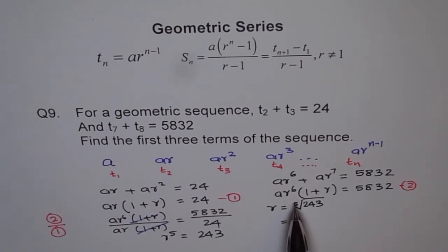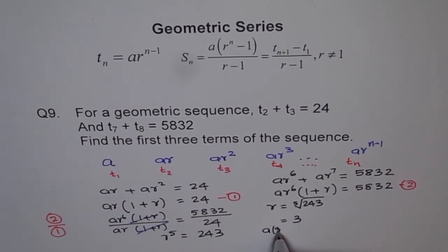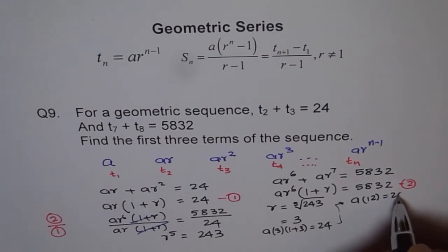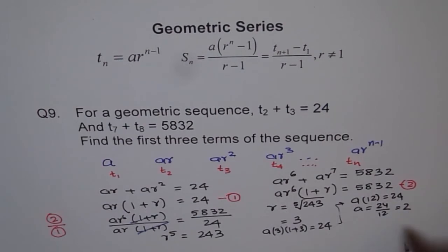Now, if r is 3, then what is a? We can plug the value of r in this equation, equation number 1 and find a. So if we do so, what do we get? We get a times r is 3, times 1 plus 3 equals to 24. That means a times 3 times 4 is 12. So a times 12 equals to 24, and therefore a equals to 24 divided by 12, which is 2. So we know our a and we know our r.